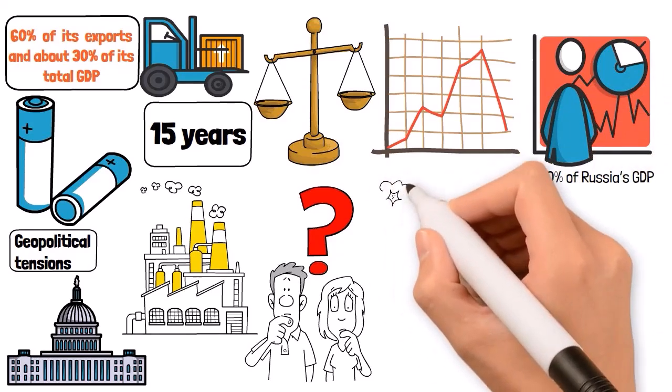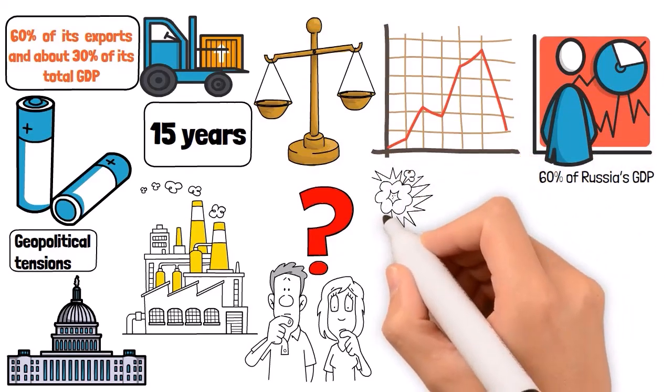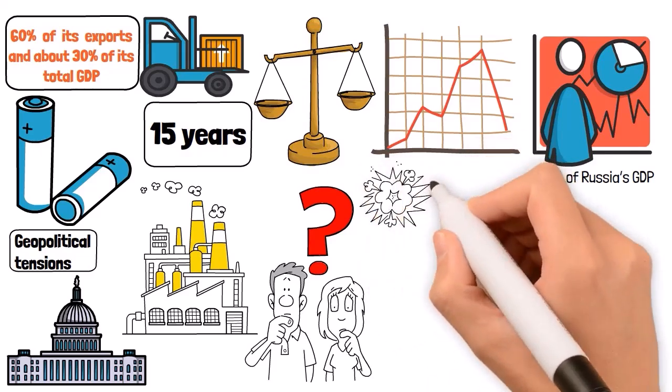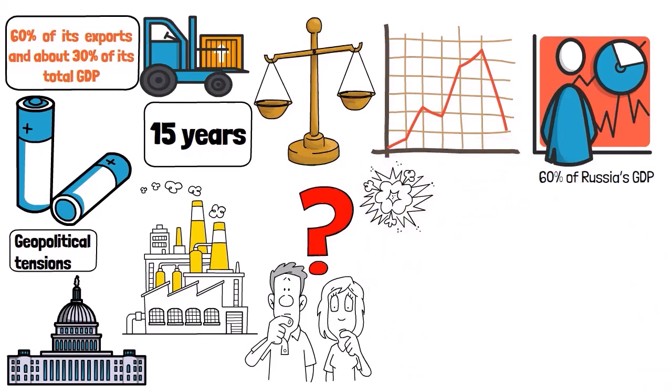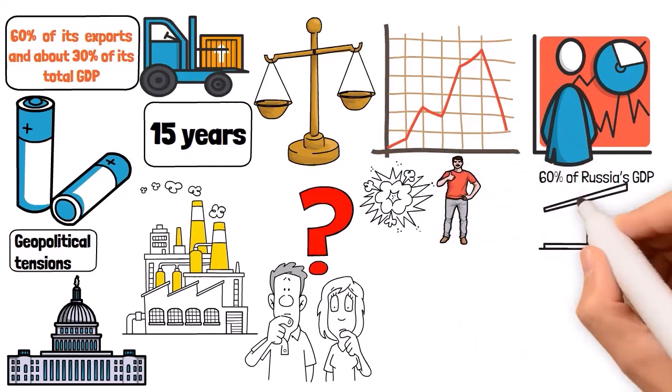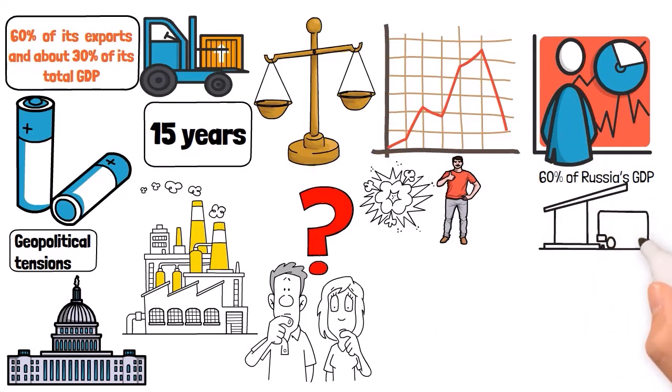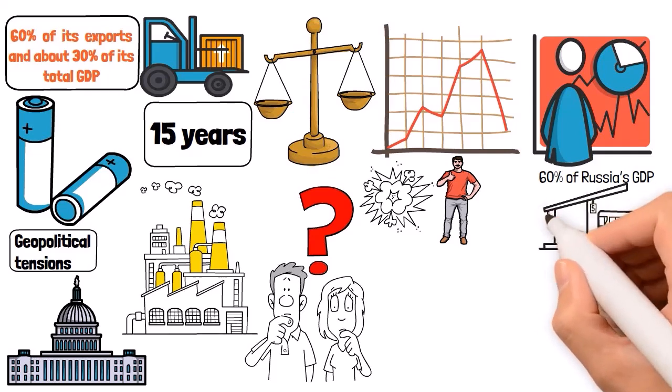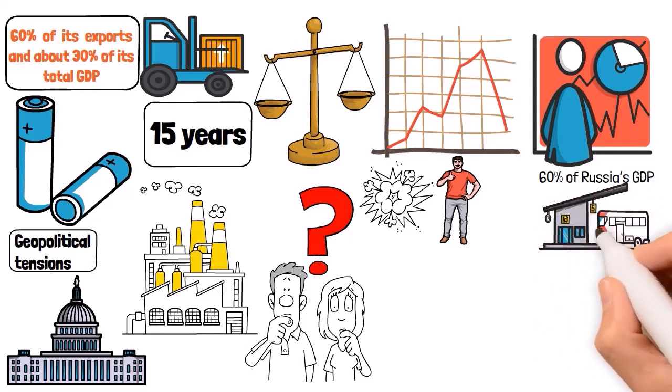The Kremlin has also been known to nationalize key assets, especially when Western companies have pulled out of Russia due to geopolitical tensions. Pay attention, we'll still discuss each of these in detail. One of the most notable examples of Putin's centralization was the state's takeover of Yukos Petroleum. Once Russia's largest oil company, Yukos was dismantled after its CEO, Mikhail Khodorkovsky, was arrested on charges of fraud and tax evasion. The company's assets were absorbed by state-controlled entities, setting a precedent for the government's approach to private business.